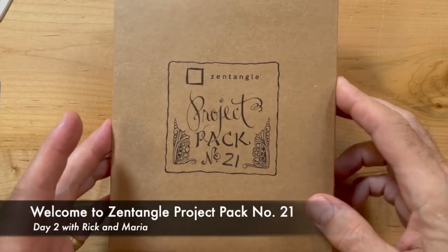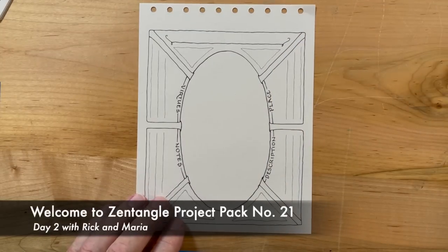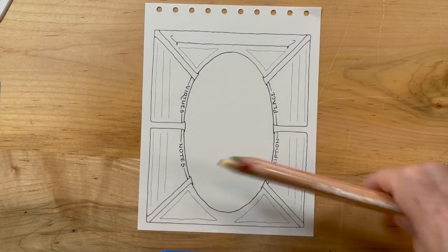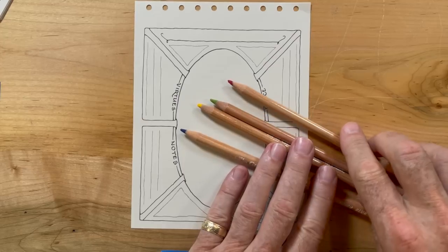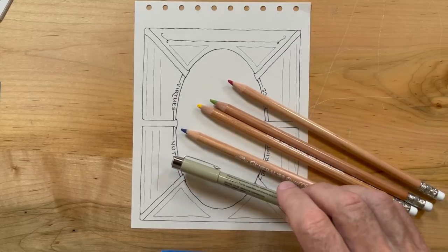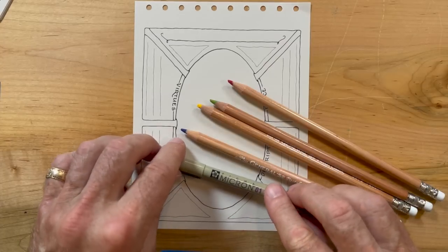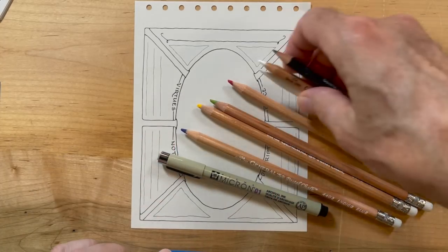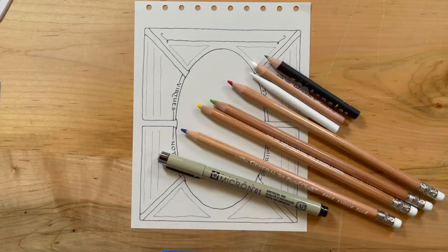Welcome to Project Pack number 21. This is day two. My name is Rick. Hi, I'm Maria, and we are having the best time doing these beautiful botanicals. These are some of the tools we're going to use, basically all of the ones that are in the pack. And one of our lovely pages.